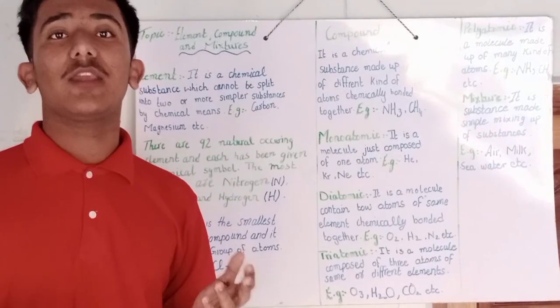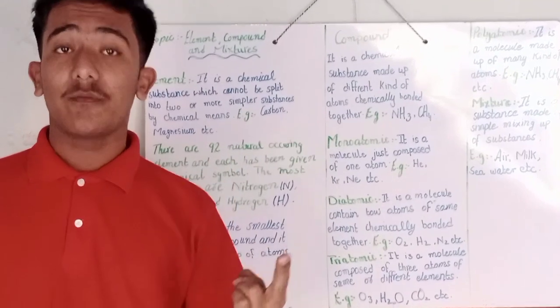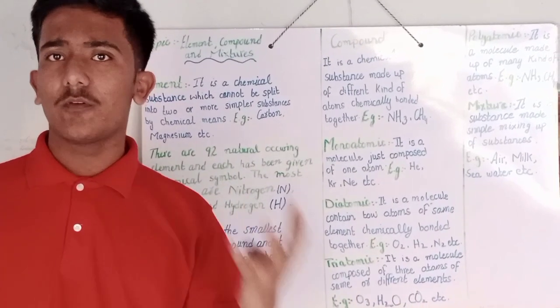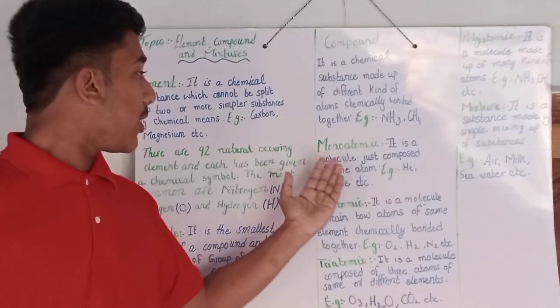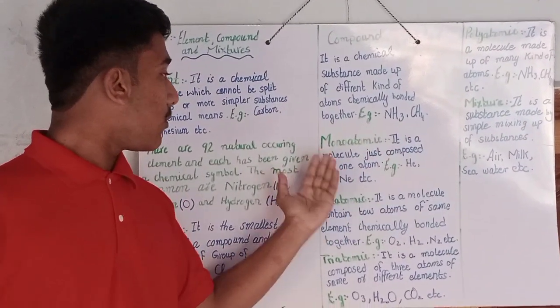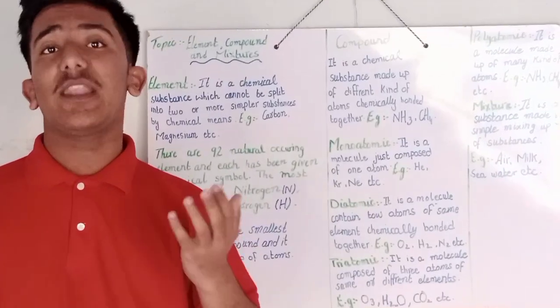There are many kinds of molecules. Either it is made up of one atom or it is made up of two atoms, three atoms, or four atoms. One is monatomic. Monatomic, it is a molecule just composed of only one atom. For example, helium, krypton, neon, noble or inert elements.